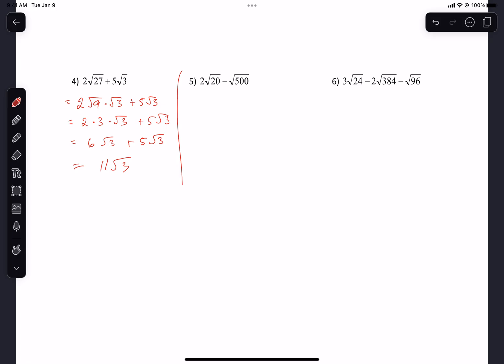What about the next one? Simplify both radicals. 2 roots what? Root 4 times root 5. And then root 100 times root 5. Everyone happy with that? And then we can go, that's 2 times 2 root 5 minus 10 root 5s, which is 4 root 5s minus 10 root 5s.